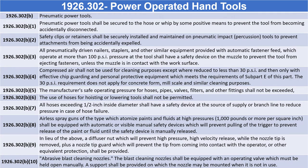1926.302(b)(2): Safety clips or retainers shall be securely installed and maintained on pneumatic impact and percussion tools to prevent attachments from being accidentally expelled. 1926.302(b)(3): All pneumatically driven nailers, staplers, and other similar equipment provided with automatic fastener feed which operate at more than 100 PSI pressure at the tool shall have a safety device on the muzzle to prevent the tool from ejecting fasteners unless the muzzle is in contact with the work surface.